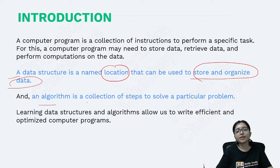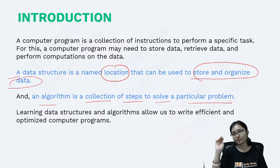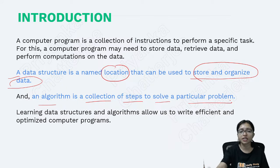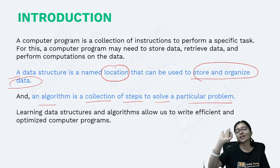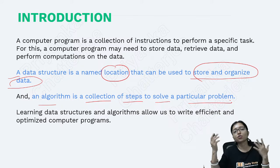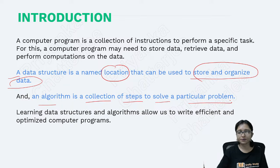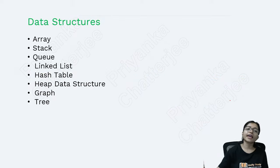Different ways, as per our requirement, we store data so that we can access it easily - that is data structure. And what is an algorithm? An algorithm is a collection of steps to solve a particular problem. Whenever you are trying to solve a problem, the step-by-step process is called an algorithm. Without knowing the algorithm, you cannot solve the problem.